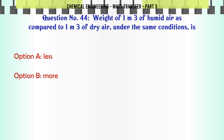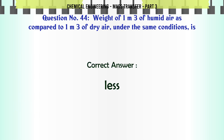Weight of 1 m³ of humid air as compared to 1 m³ of dry air under the same conditions is: A) less, B) more, C) same, D) unpredictable. The correct answer is: less.